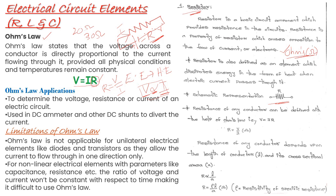Coming to the applications: Ohm's law is used to determine the voltage, resistance, or current of any electric circuit. Out of these three quantities, any two parameters must be known to calculate the third one. Another application is that it can be used in DC meters and also in DC shunts to divert currents — a shunt meaning a parallel connection. These are a few of the many applications of Ohm's law.